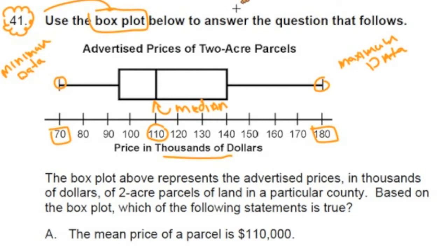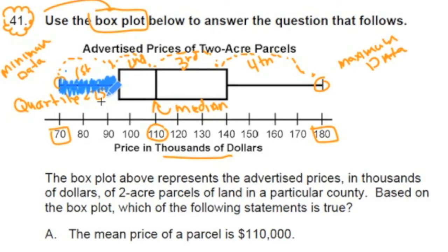Box plots organize data in four sections: first, second, third, fourth. Each one of these sections is called a quartile and represents 25% of the data points. The first quartile are all the data points in here and they represent 25% of our data set.